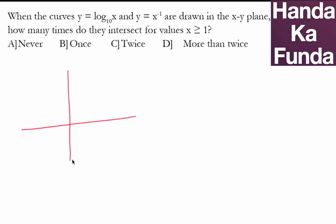Now what would the graph of log x look like? The graph of log x would look something like this. Please note that we are only bothered with x greater than 1. This point is 1 comma 0, so anything on the right of this particular point.